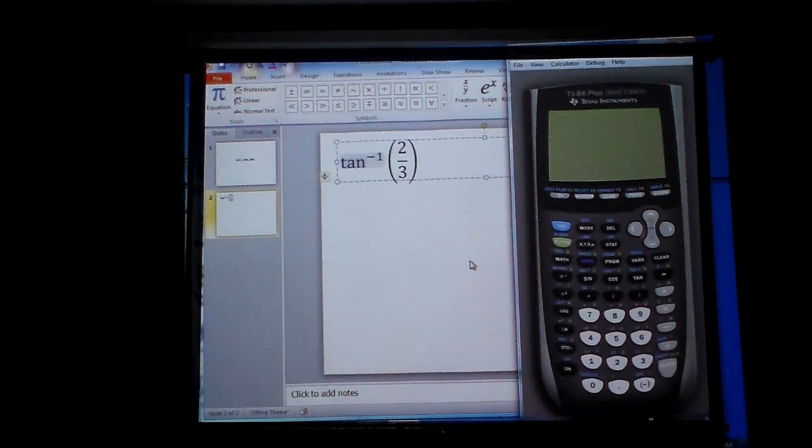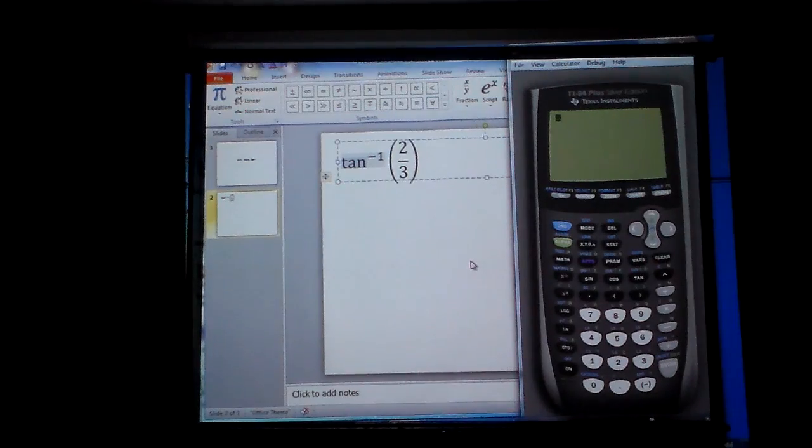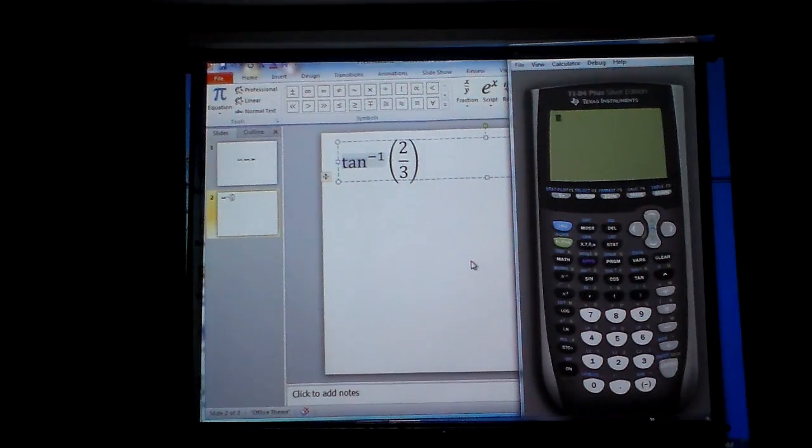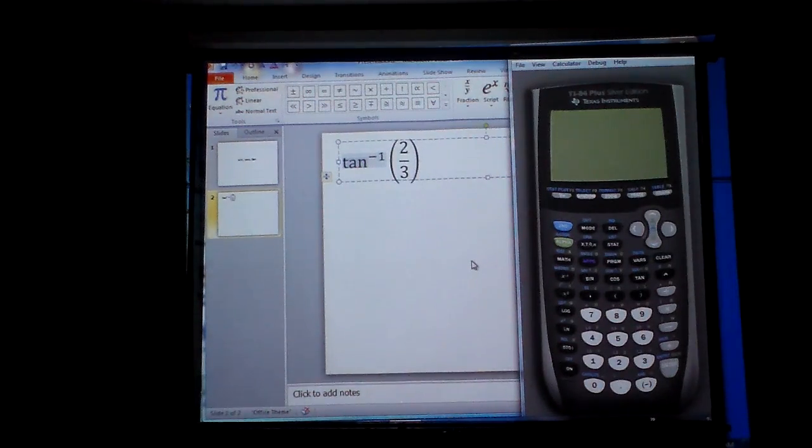Okay, so here we go. This particular problem, I want to find the angle provided that the opposite side is 2 and the adjacent side is 3, because that's what that represents, that ratio, that proportion.